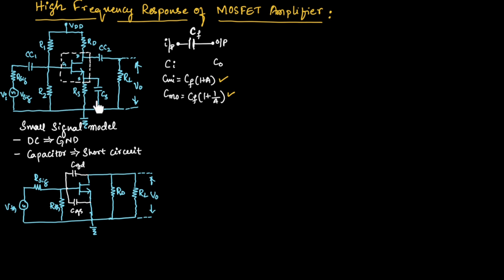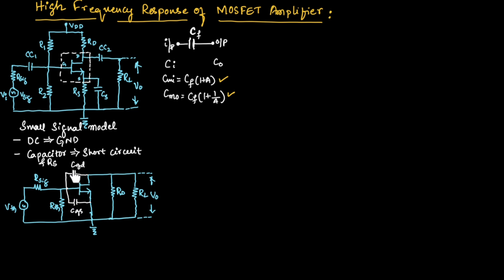For this voltage divider bias circuit, we need to write the small signal model. To do so, we connect the DC source to ground, and capacitors CC1, CC2, and CS along with the source resistor are short-circuited. In the small signal model, VDD is connected to ground and capacitors are short-circuited. In place of R1 and R2, we write an equivalent Thevenin resistor RTH, along with two internal capacitances CGD and CGS.